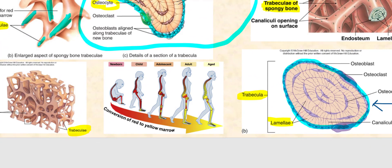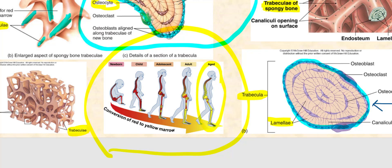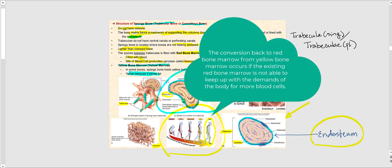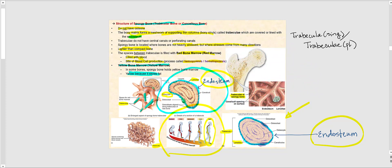While we are young — as a newborn, child, or adolescent — most of the spongy bone contains red bone marrow. As we continue to age, red bone marrow is replaced with yellow bone marrow, so that by the senior years most of the open spaces between the trabeculae contain yellow bone marrow. However, it is possible for yellow bone marrow to become red bone marrow: when the body needs blood cells, yellow bone marrow can resume the process of hematopoiesis and resume blood cell production.